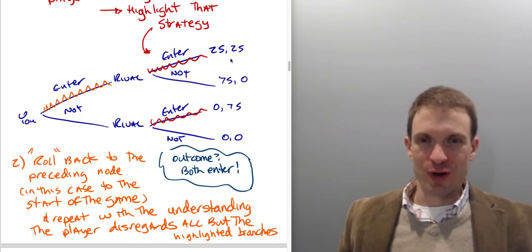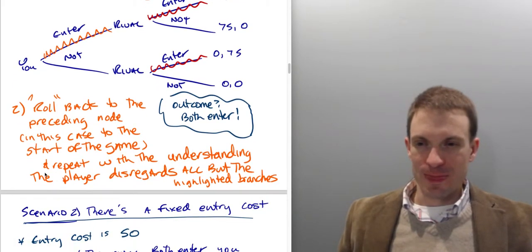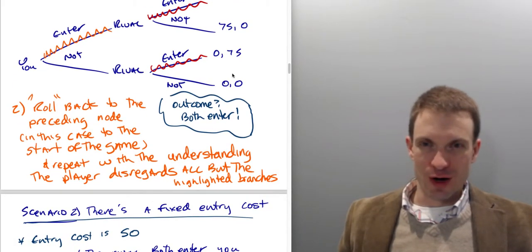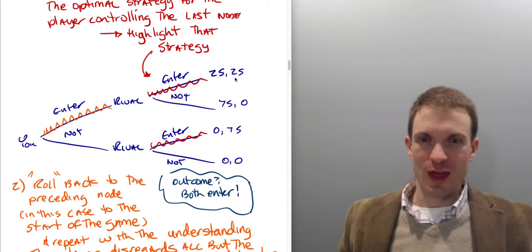And so this is going to give us our outcome. Our backward induction outcome is going to be enter, enter. So the outcome, both are going to enter. In equilibrium, both firms enter and receive payoffs of $25,000 each.